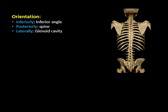Regarding orientation of the scapula: what is inferior is the inferior angle or apex of the triangle; what is posterior is the spine; what is lateral is the glenoid cavity and acromion. Just one direction in each dimension is enough to orient the bone.